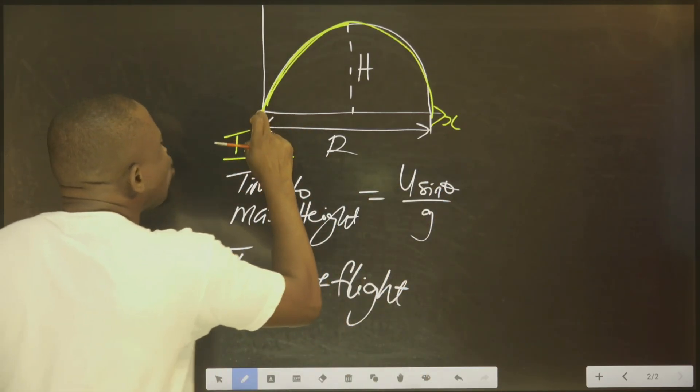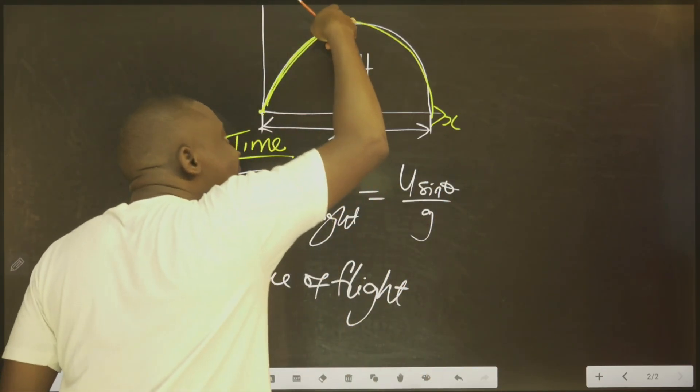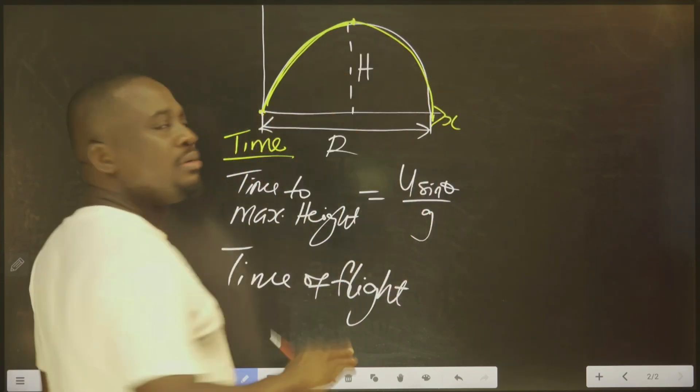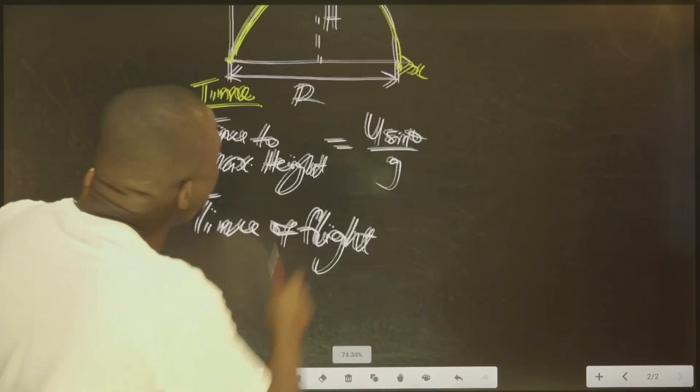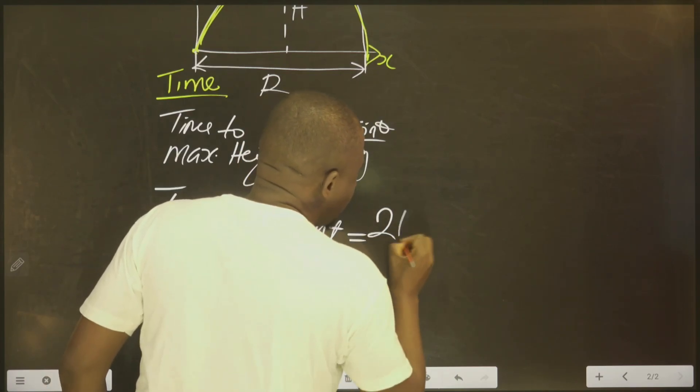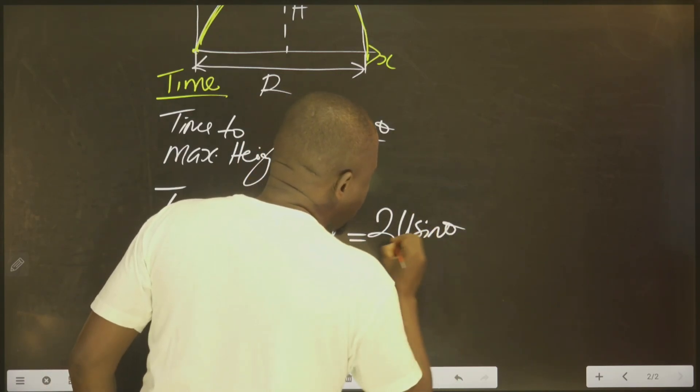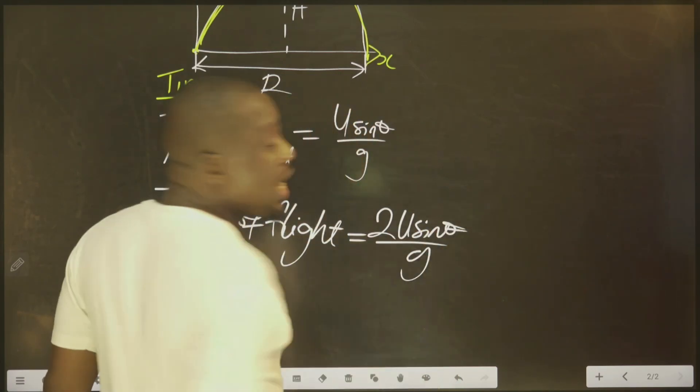Now that you know this one, to now know the time of flight is just to multiply this one by two. The time it took you to reach here is equal to the time it will take you to reach here. That is the point. So therefore, we multiply this one by two.